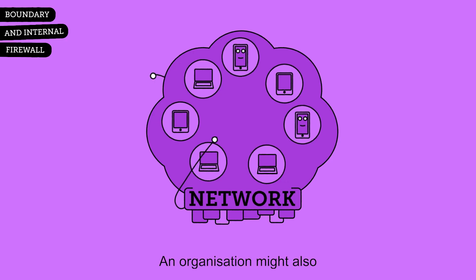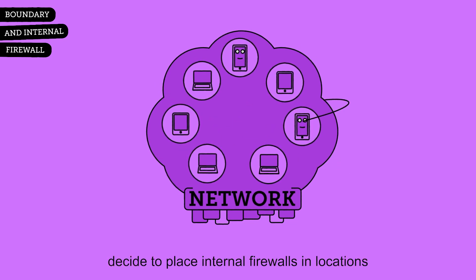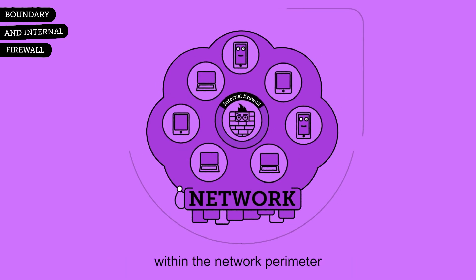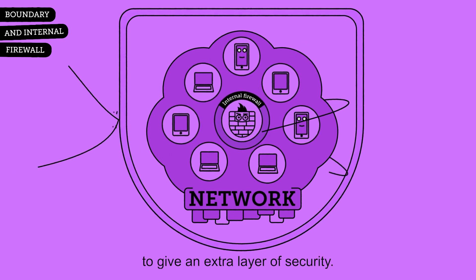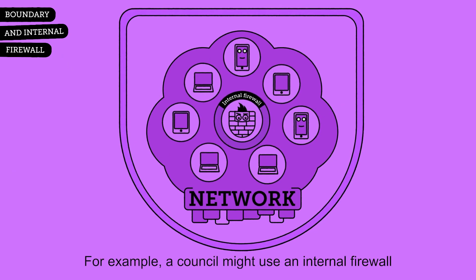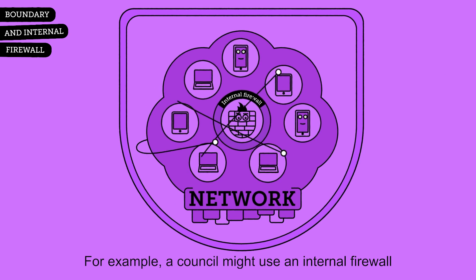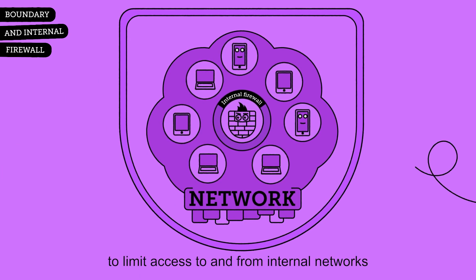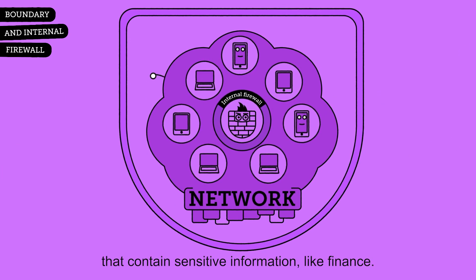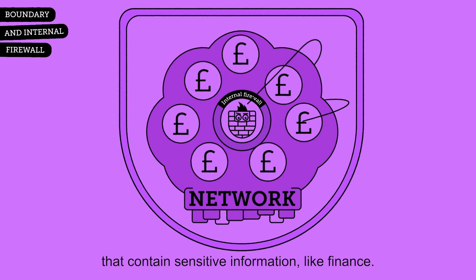An organization might also decide to place internal firewalls in locations within the network perimeter to give an extra layer of security. For example, a council might use an internal firewall to limit access to and from internal networks that contain sensitive information like finance.